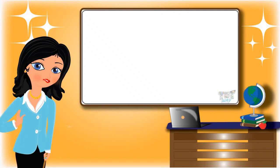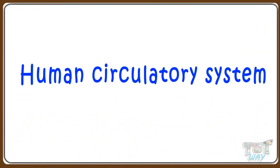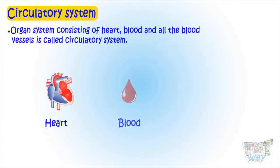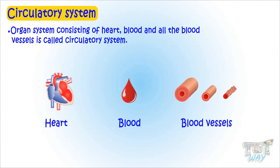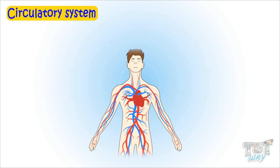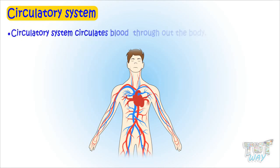Hi kids, today we will learn about the human circulatory system. So let's start. The organ system consisting of heart, blood, and all blood vessels is called the circulatory system. The circulatory system circulates blood throughout the body.